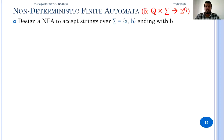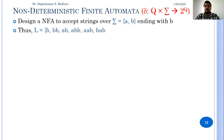Let us design a non-deterministic finite automata, NFA, to accept strings over A and B which end with B. So the language accepted by this NFA will be L = {B, BB, AB, ABB, AAB, BAB, BBB, BAABB, and so on}, such that all strings must end with B.